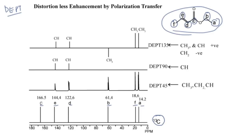Carbon number c is the carbon which does not have any hydrogen attached to it — it's a quaternary carbon. In the DEPT spectra, you don't get any peak for a carbon that does not have hydrogen. So the peak corresponding to carbon number c is not present in any of the DEPT spectra — DEPT 45, DEPT 90, or DEPT 135 — whereas you are getting peaks for carbons a, f, b, d, and e.